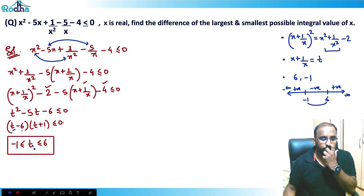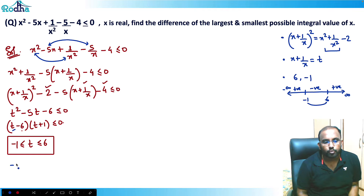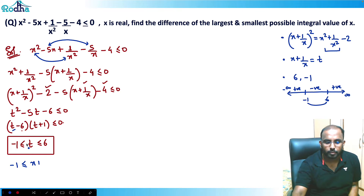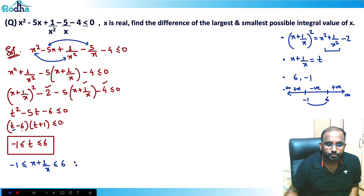So now I can say: since t = x + 1/x, we have -1 ≤ x + 1/x ≤ 6.